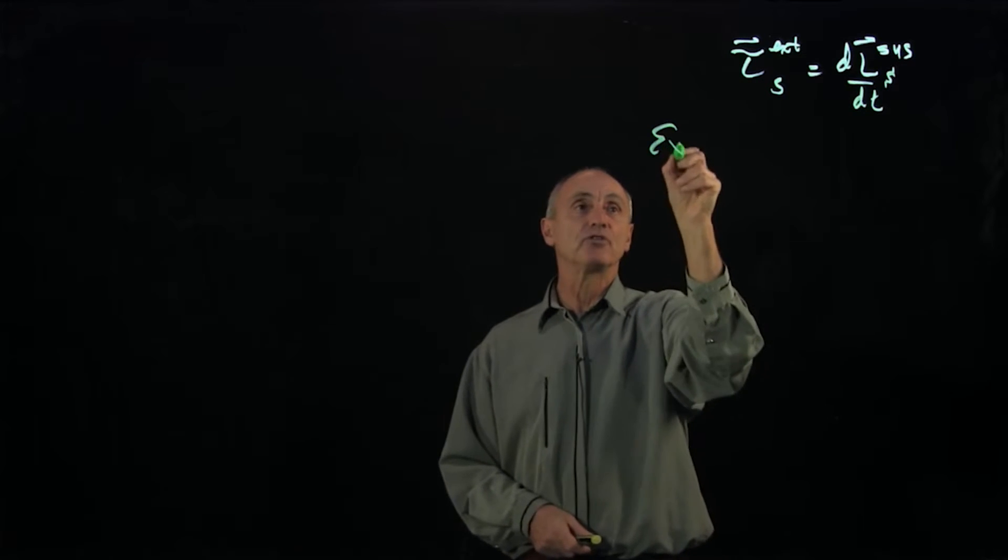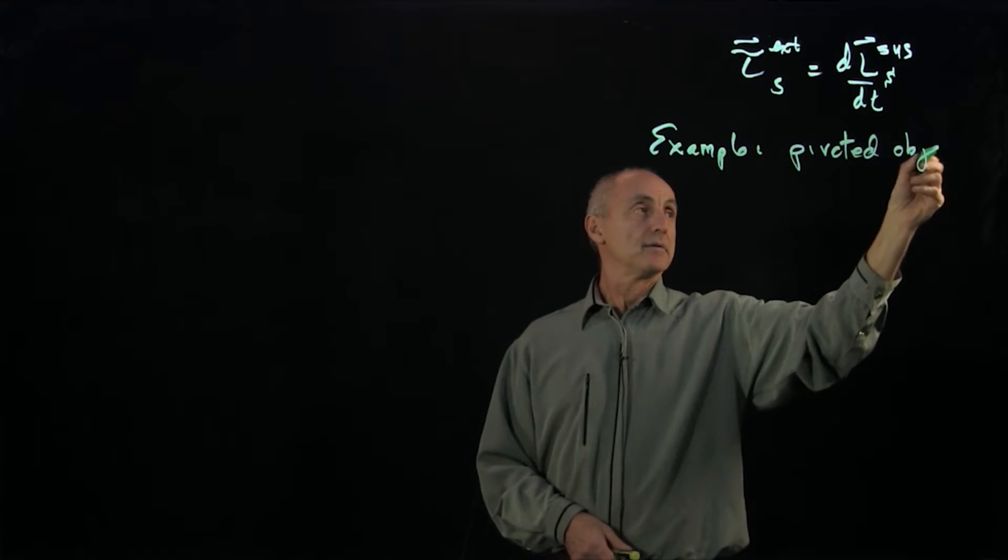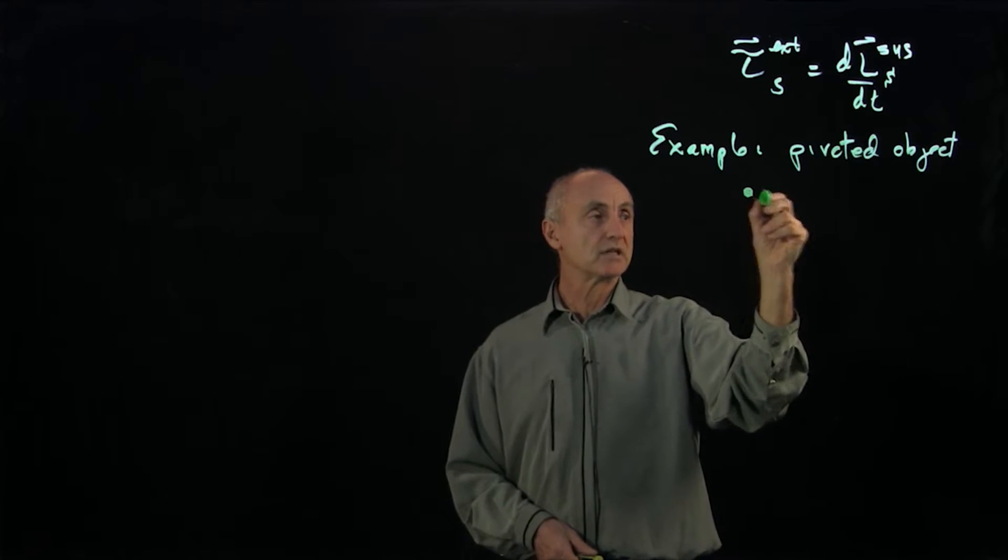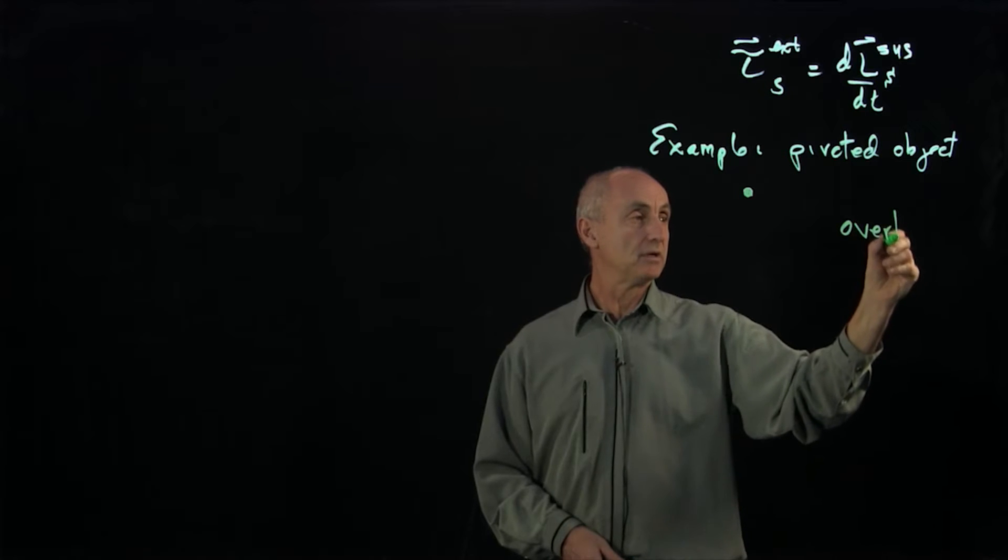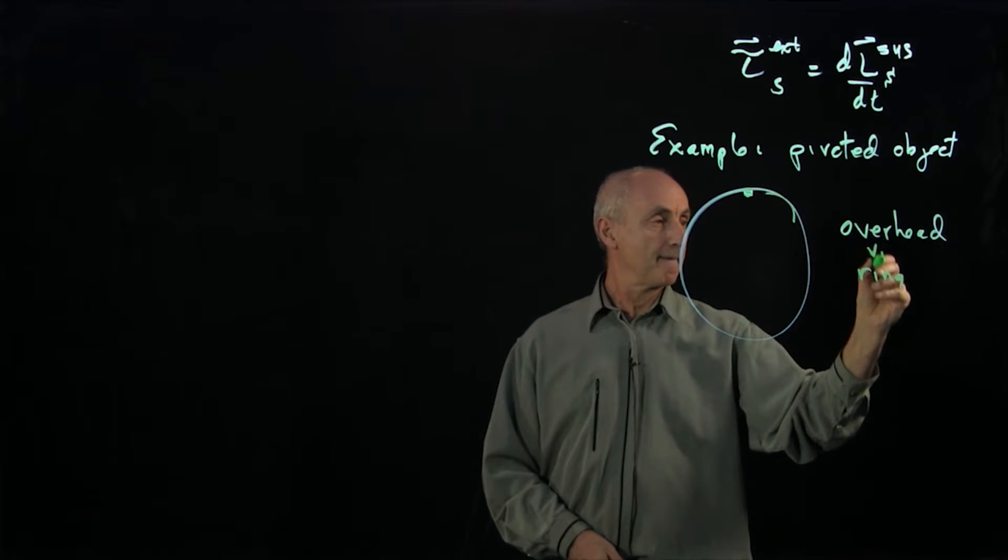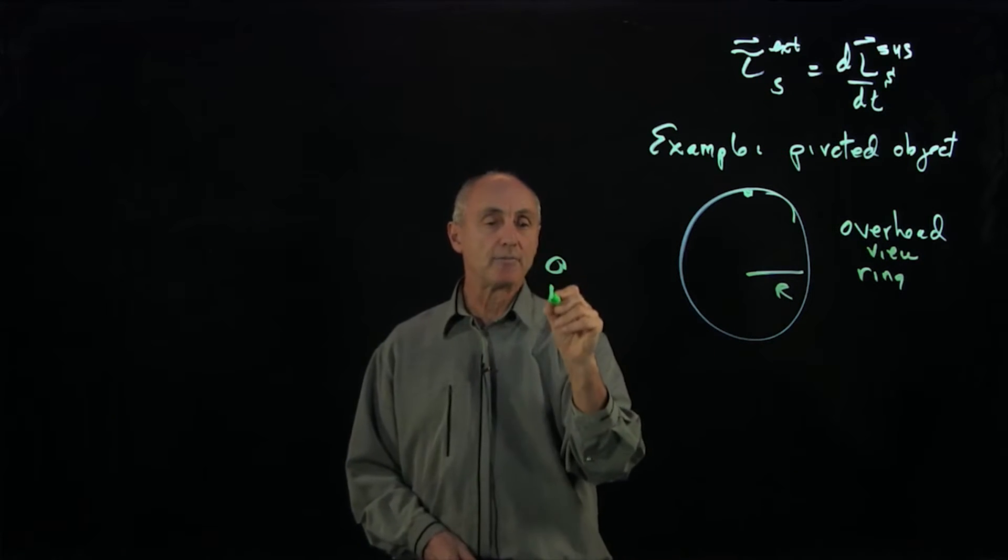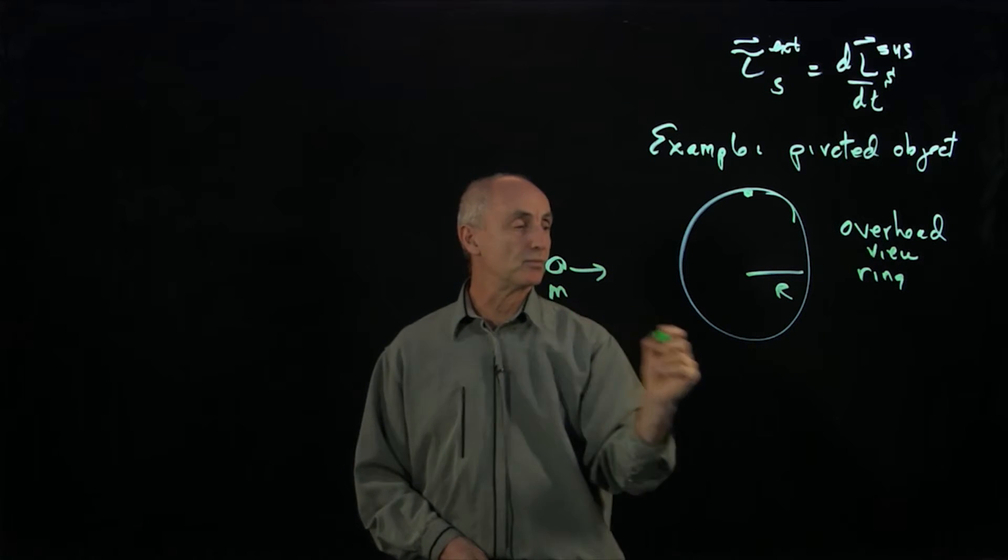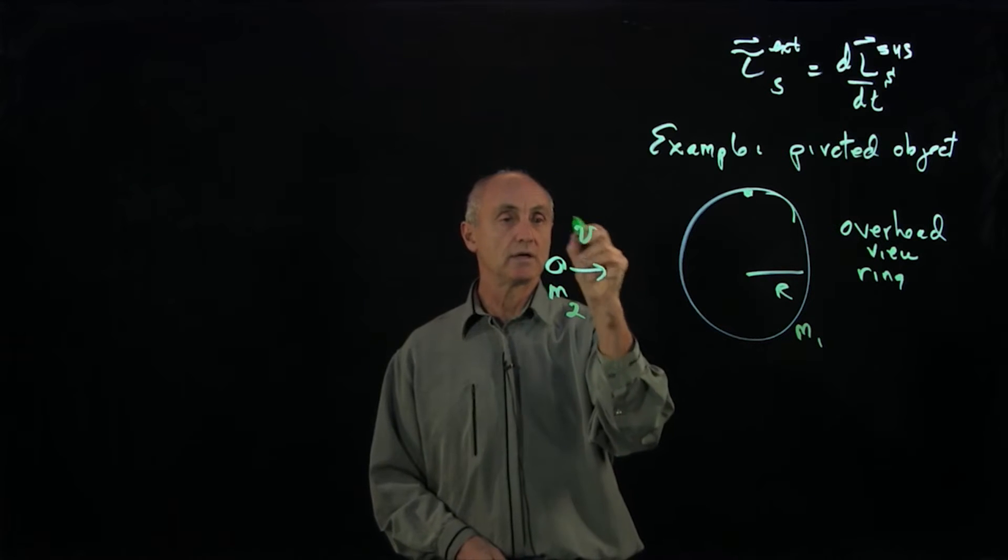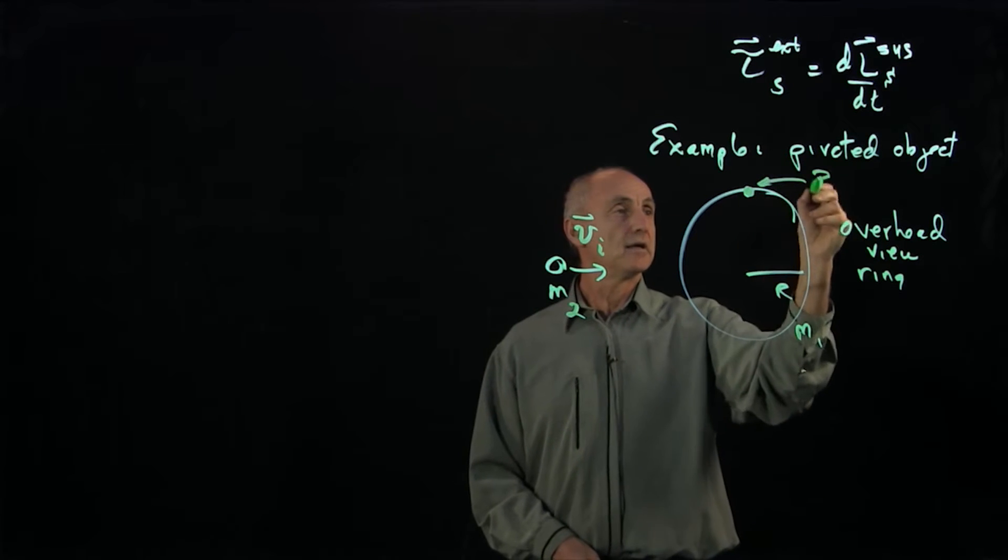Now, as examples, let's look at a case where we have a pivoted object. So I could take an example of an object. This will be an overhead view of a ring of radius r. And I'm going to have a mass coming in. I'll call this ring mass m1, this object m2, this object is coming in with initial velocity, and this is my pivot point.